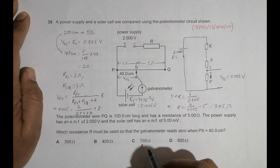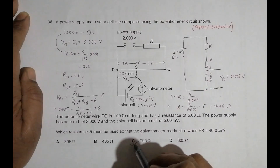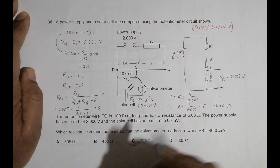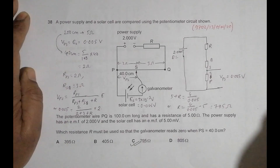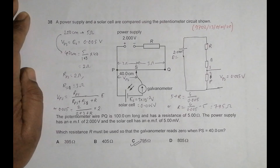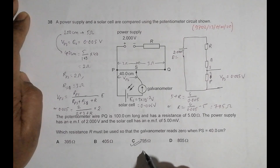Going through the answer choices, the correct answer is C, which is 795 ohm. Some of you might blame me for using a calculator even for that, but yes, that's my weakness — I accept it. I need a calculator even for very small calculations, and I got 795 ohm. Thank you.